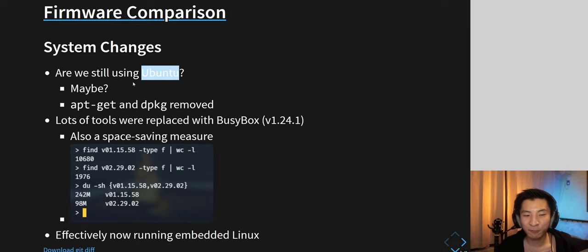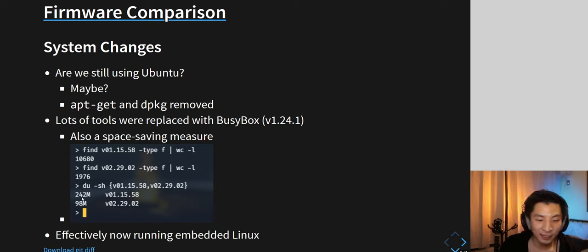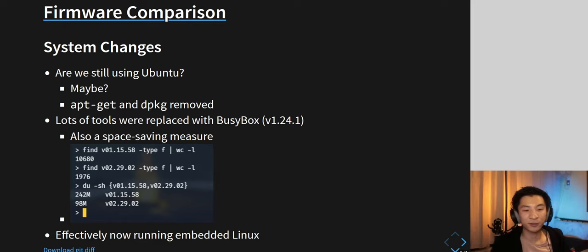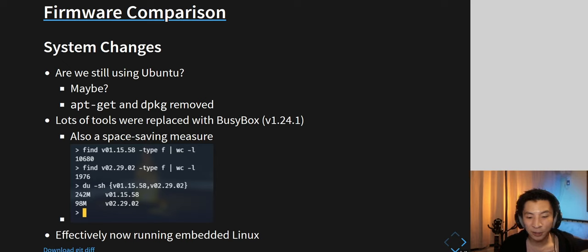Are we still using Ubuntu? Hard to tell exactly — apt-get and dpkg were both removed. A lot of tools were replaced with BusyBox, and you can see it saved at least 150 megabytes. So from a manufacturer's perspective, it's not about restricting users — smaller file sizes mean less server storage, faster downloads, faster updates. Right now it's effectively running an embedded version of Linux.